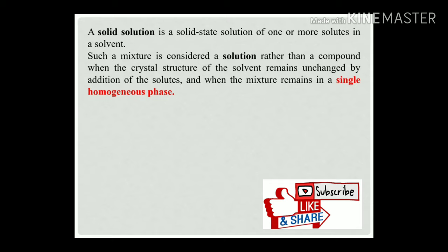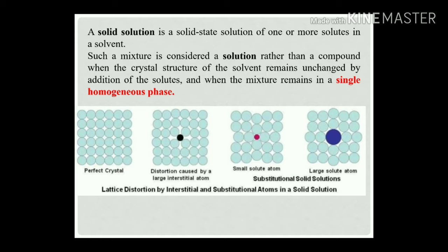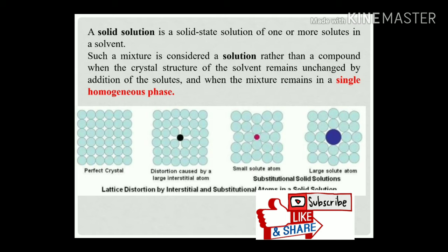A solid solution remains in a single homogeneous phase — that is, a single solid material mixed uniformly. Consider the first figure showing a perfect solvent structure. When an alloying element is added, the structure changes to a new arrangement representing imperfections in the structure. If the solute and solvent atoms are the same size, that is called a substitutional solid solution. If the sizes are different, it becomes an interstitial solid solution.